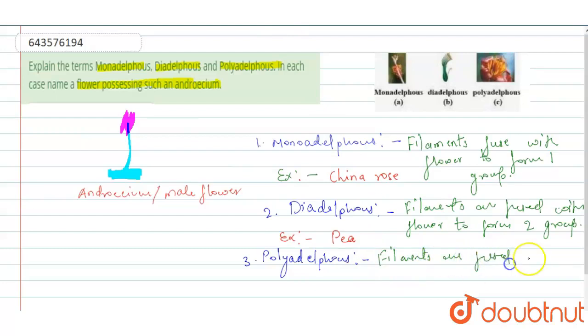A good example of polyadelphous is Bombax plant.